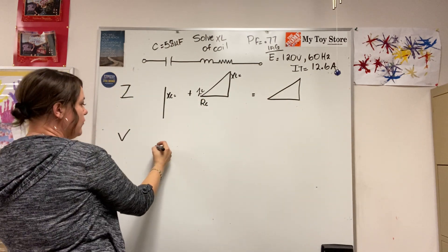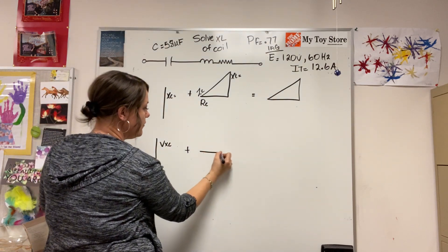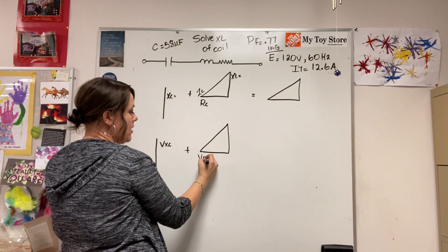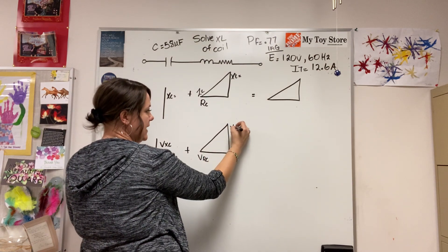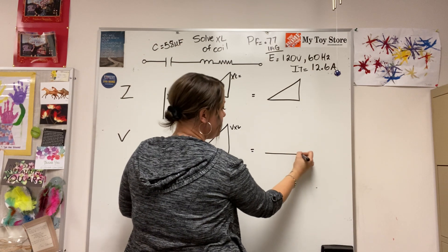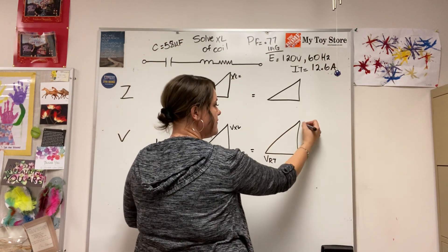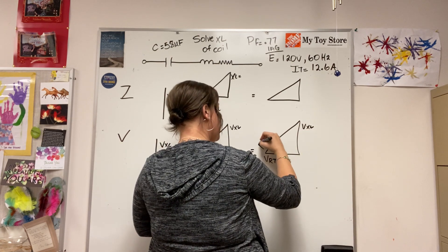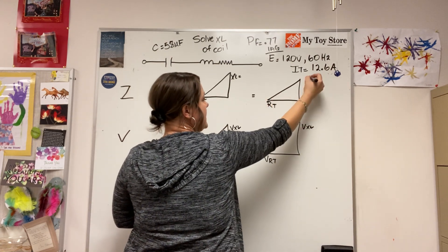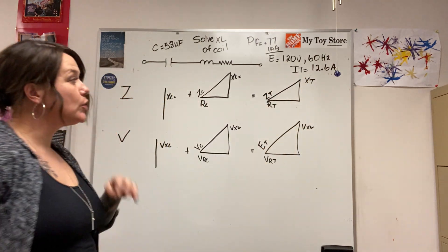And then my voltage triangle would be the same: VXC plus voltage triangle for my coil, so VR coil, VXL, V coil. And then my circuit voltage triangle, so this would be VR total, VXL, VXT total. So supply voltage, this would be R total, XT total, and impedance total.